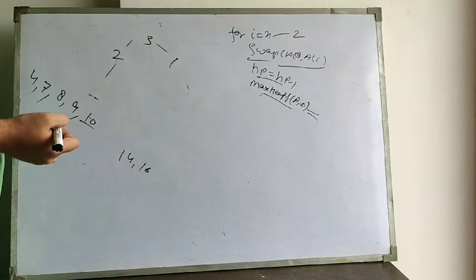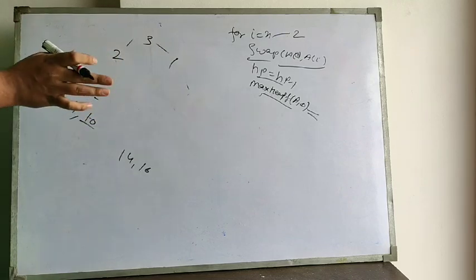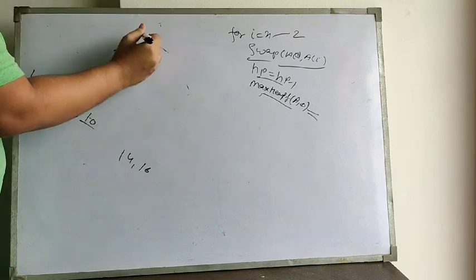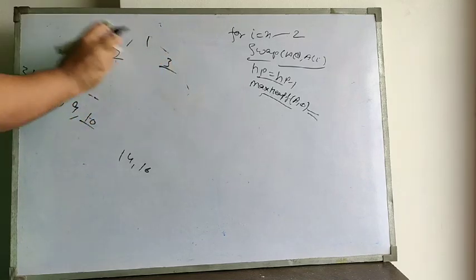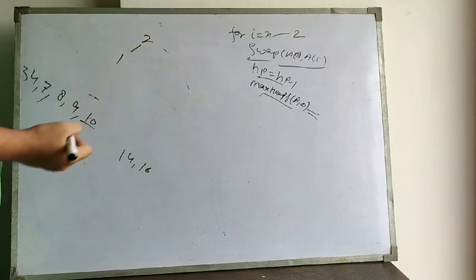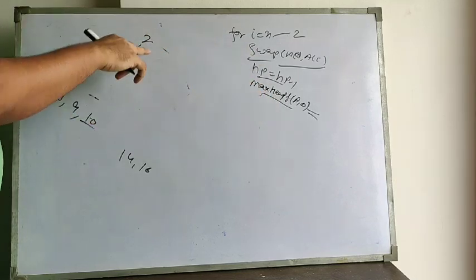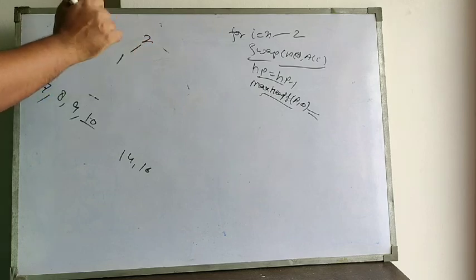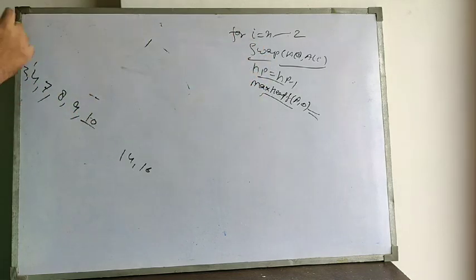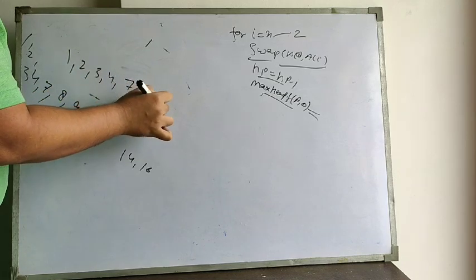Now we have 3 and 1 remaining. Swap 3 and 1 — extract 3. Now swap: 2 and 1 are remaining. Swap 1 and 2 because of max heapify. So we have 1 and 2 — extract 2 and reduce the heap size by 1. Finally 1 remains. The sorted order is: 1, 2, 3, 4, 7, 8, 9, 10, 14, and 16.